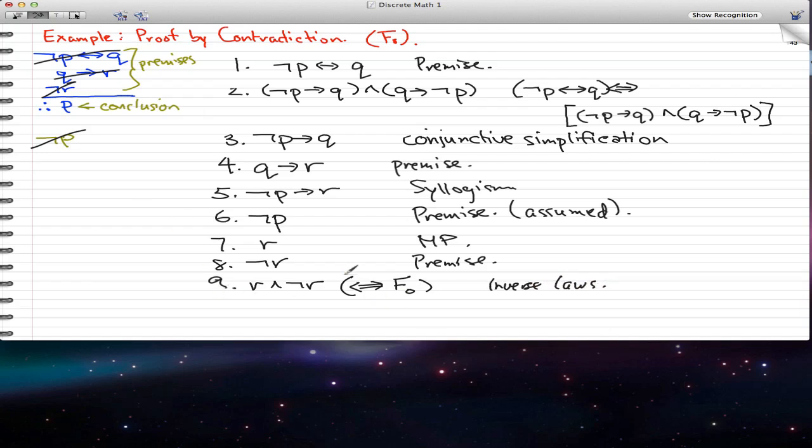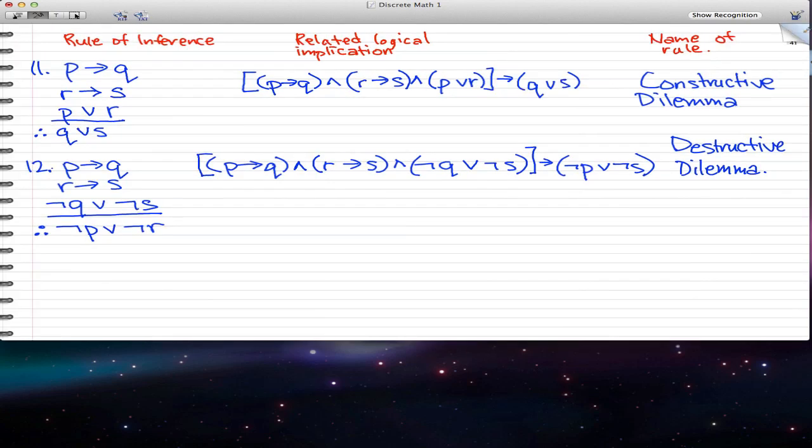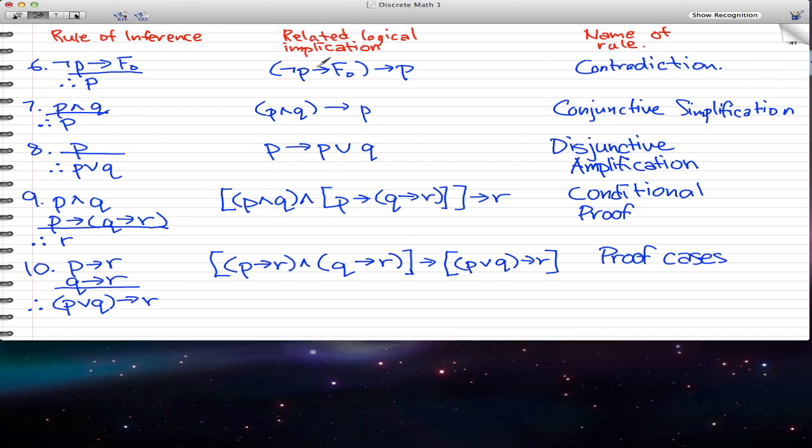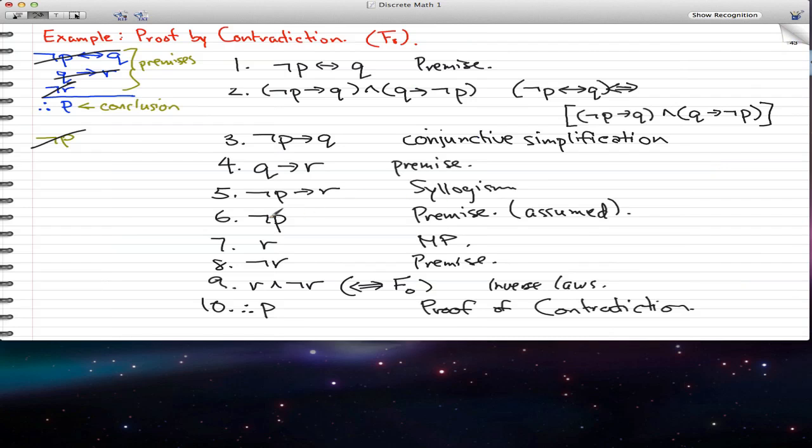So that's how we got our fo. What we set out to do is use these four premises to derive a contradiction fo. And we did derive a contradiction fo. So 10, this implies p. And this is by using negated p, number 6, and 9 to get p, and that is by the proof of contradiction. That is from one of our laws here. Negated p implies fo implies p. That is contradiction because we have our negated p and we have our fo.